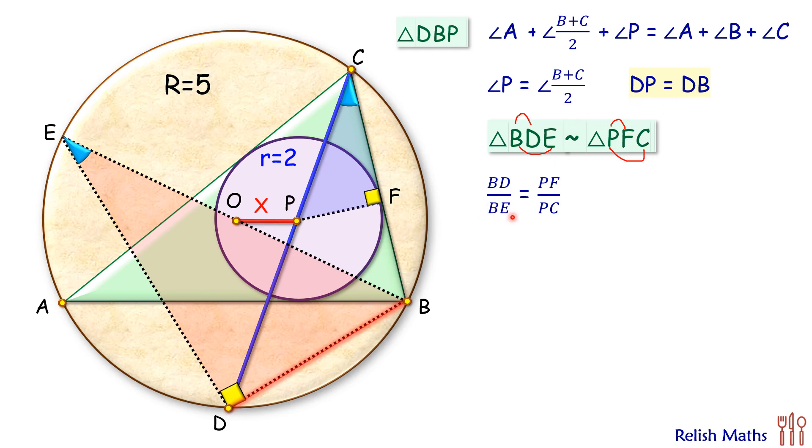Now putting the values here: BD, that's equals to DP that we have proved earlier, and BE length is the diameter or two times of radius or 10 centimeters. And PF here is the radius of inner circle, that's 2 centimeters, and PC we are not aware of. Now cross multiplying it, we will get here DP times PC is 2 times 10 or 20.